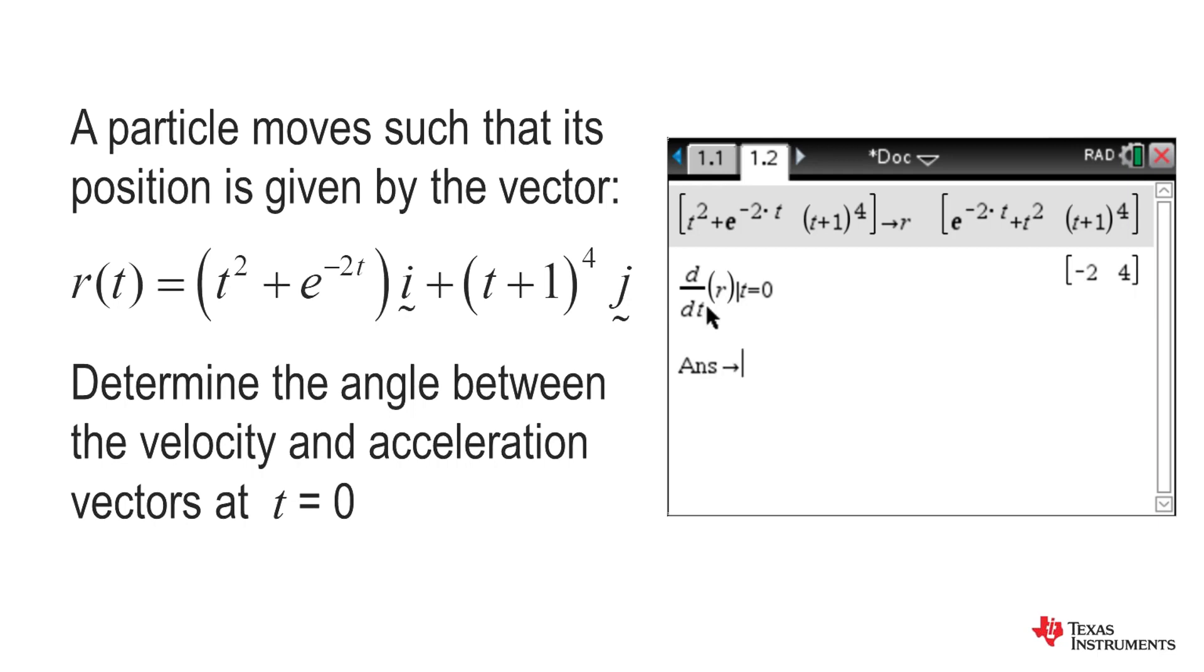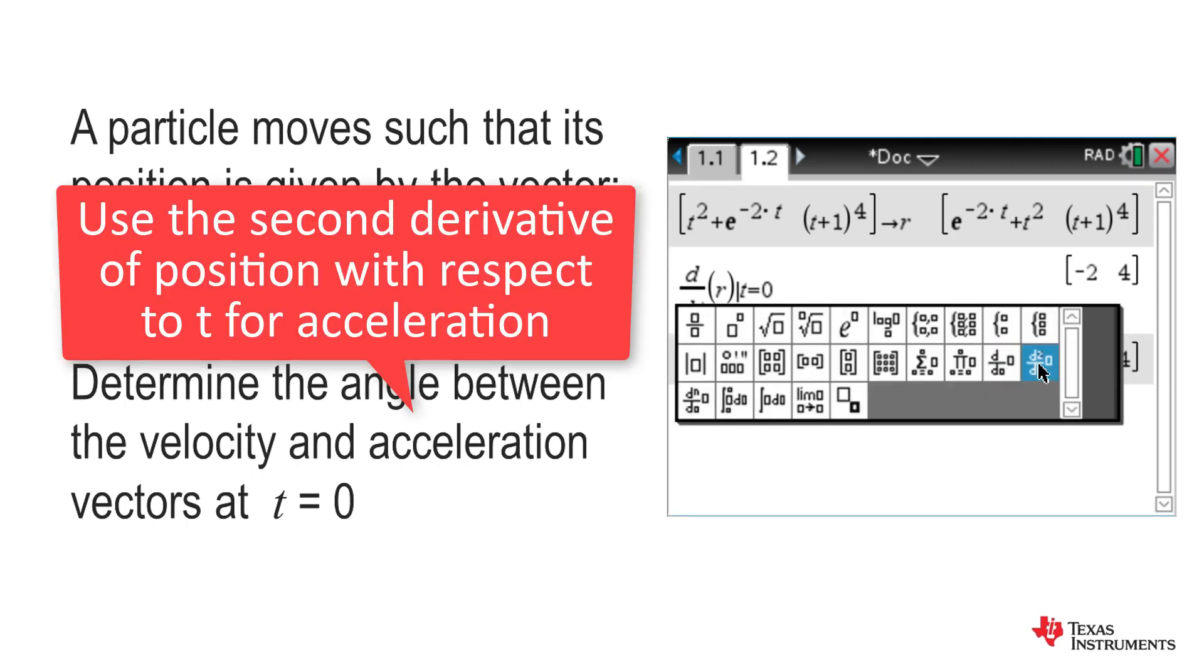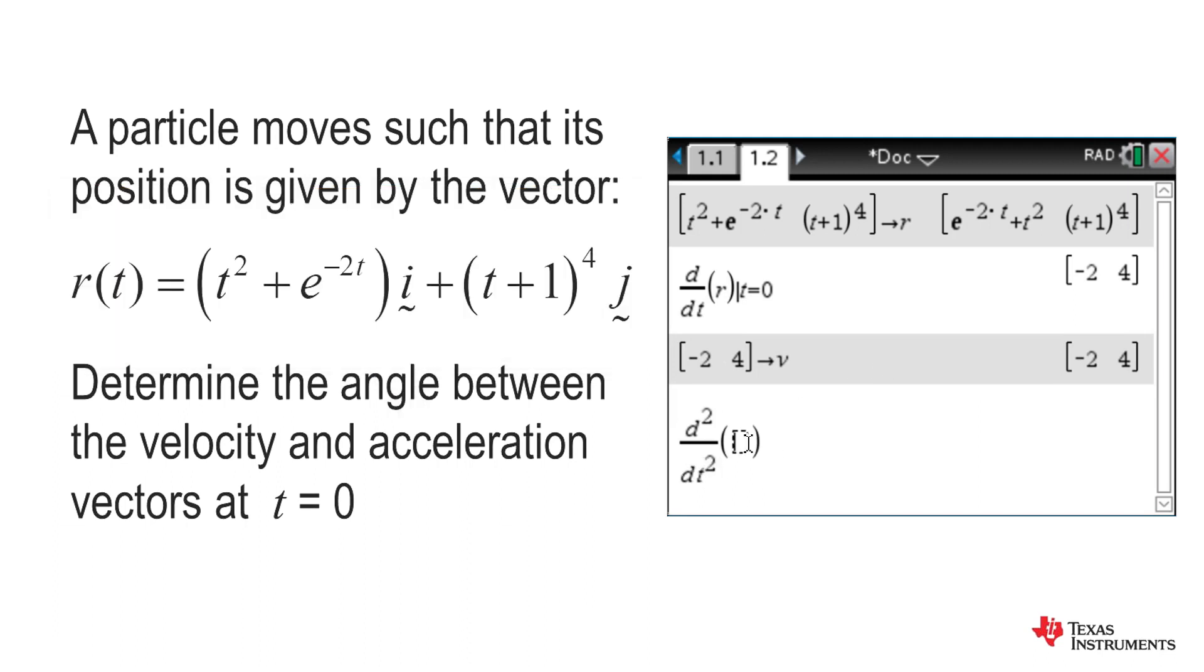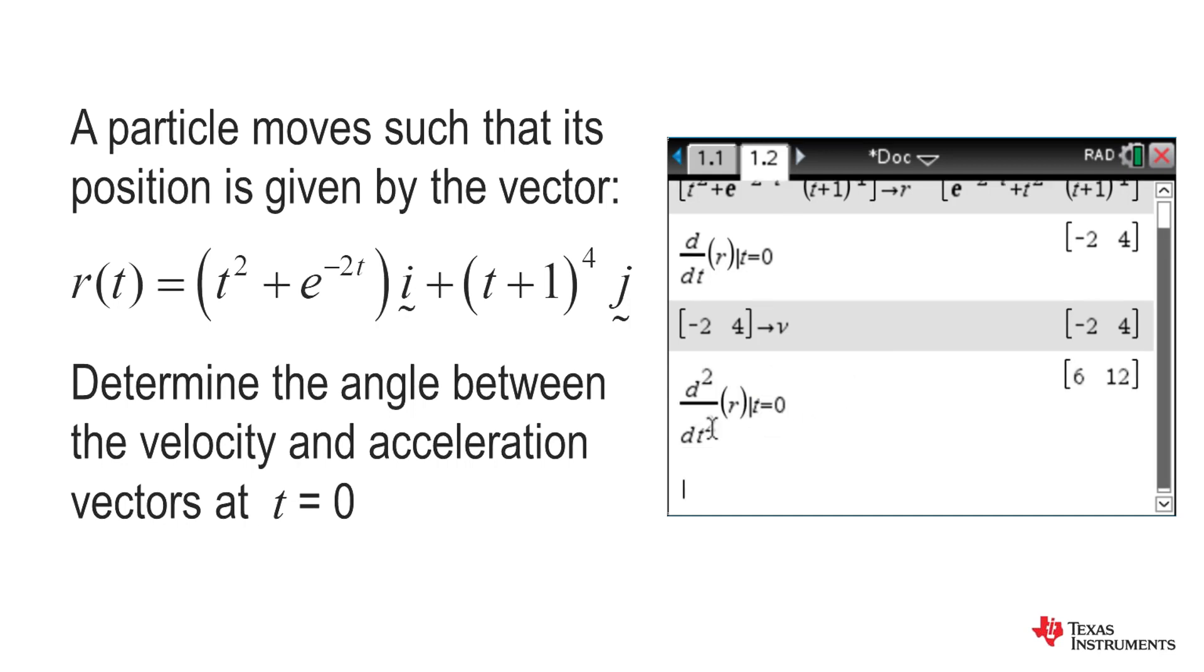To find the acceleration, we need the second derivative of the position vector with respect to time and also at time t equal to zero, and this time we will store it as acceleration.